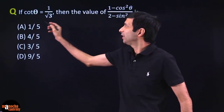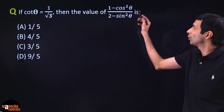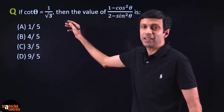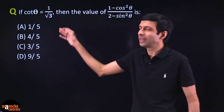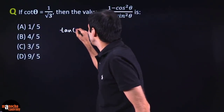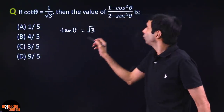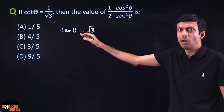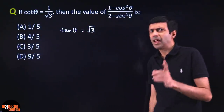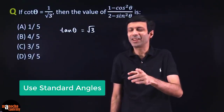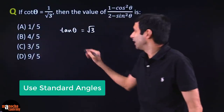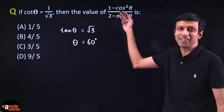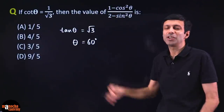Next: if cot θ = 1/√3, find the value of (1 − cos²θ) / (2 − sin²θ). I like to think in terms of tan θ, so taking the reciprocal: tan θ = √3. That's a standard angle — θ = 60°. Now that we know the angle, just substitute θ = 60° into the expression: find cos²60° and sin²60°, then simplify.